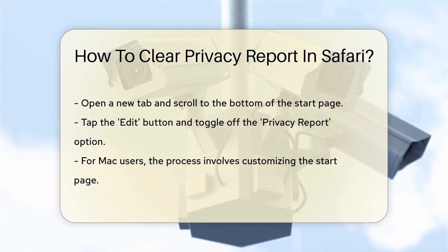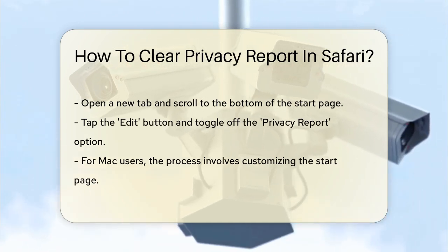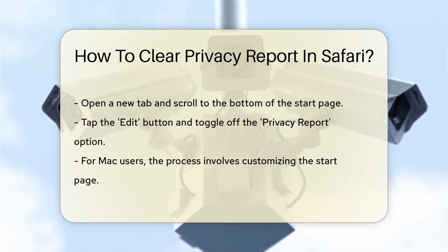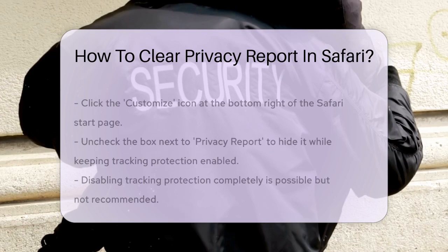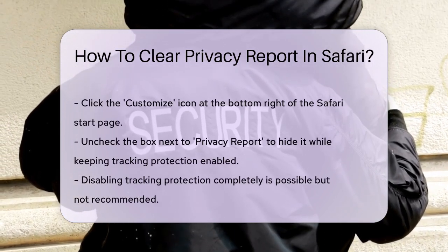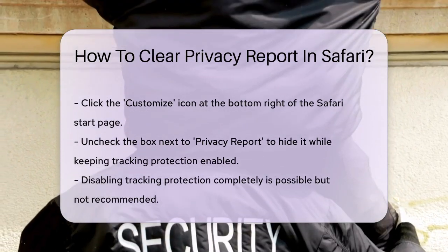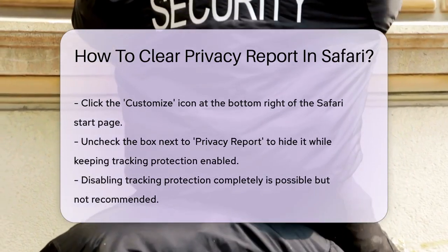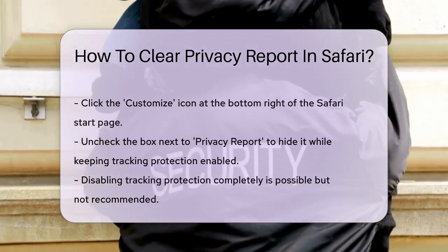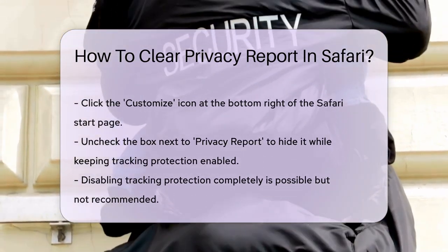The report will no longer appear on your start page. For Mac users, the process is a bit different. You can customize the start page to hide the privacy report without disabling the tracking protection. Open Safari, go to the start page, and click on the customize icon at the bottom right. This will show you a list of options where you can uncheck the box next to Privacy Report. This way, you keep the tracking protection on, but hide the report.